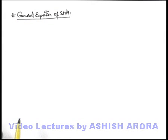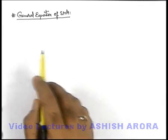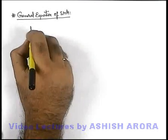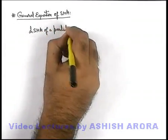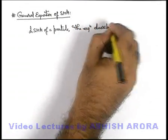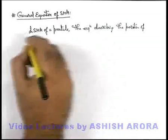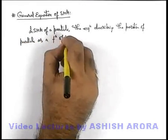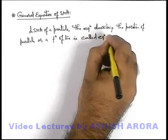For mathematical analysis of simple harmonic motion, we need to use some analytics, in which another important term is the general equation of SHM. In SHM of a particle, the equation describing the position of the particle as a function of time is called the equation of SHM.